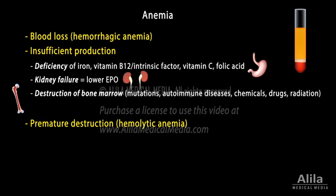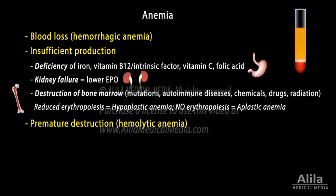Or destruction of the bone marrow tissue responsible for red cell production. This can happen because of inherited mutations, autoimmune diseases, or exposure to chemicals, drugs, or radiation, but causes are unknown for many cases. Reduced erythropoiesis is known as hypoplastic anemia, while complete cessation of red cell production is called aplastic anemia.